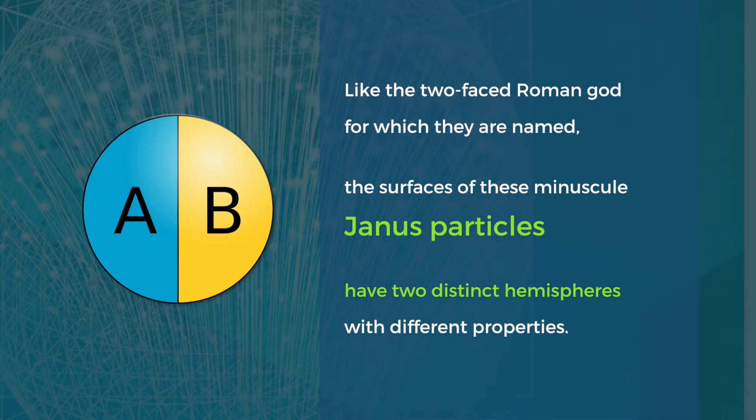Janus particles are nanometer-sized plastic particles in which the colloids or the particles have two different hemispheres with two different properties.